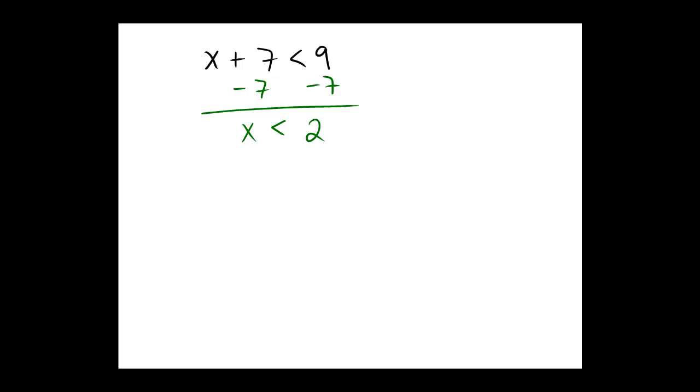So the inequality answer would just be x is less than 2. On a number line, we would go to 2, and this time put an open dot, because it's less than, not less than or equal to.